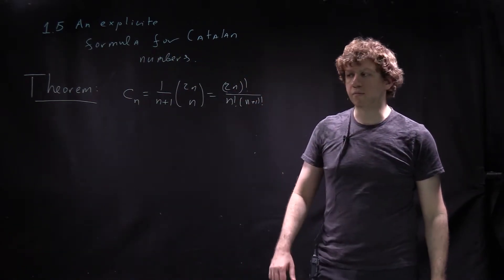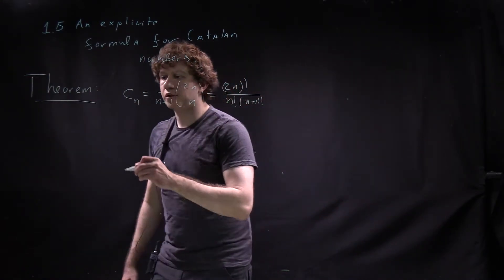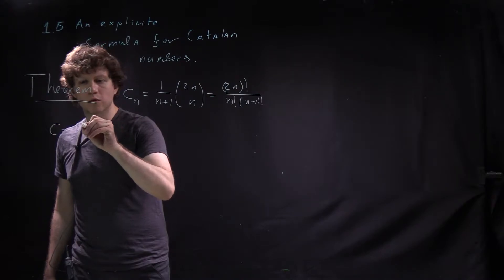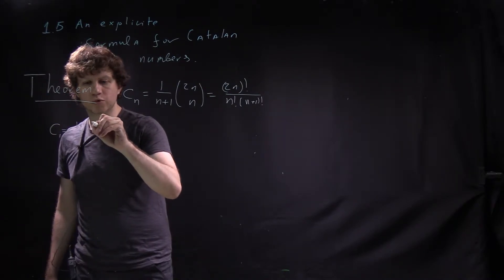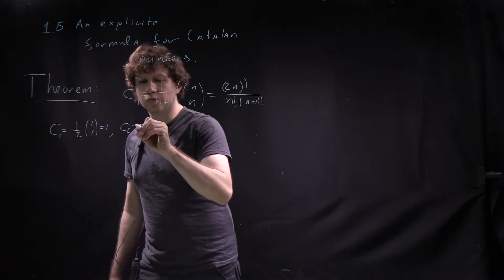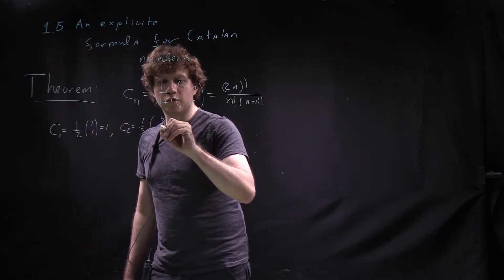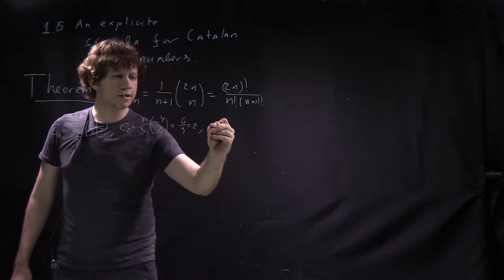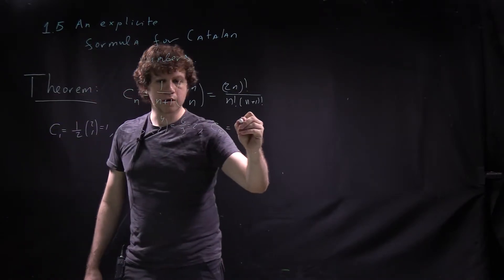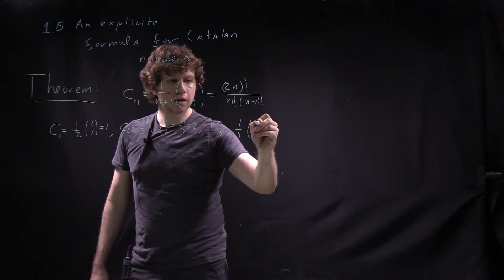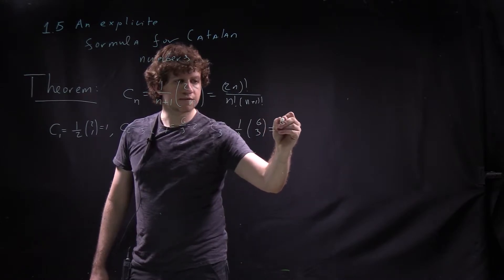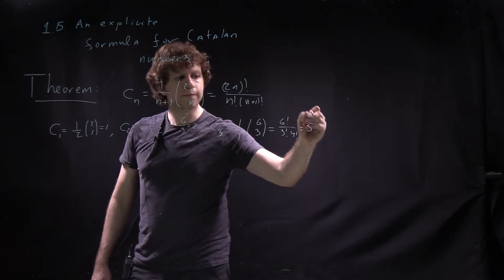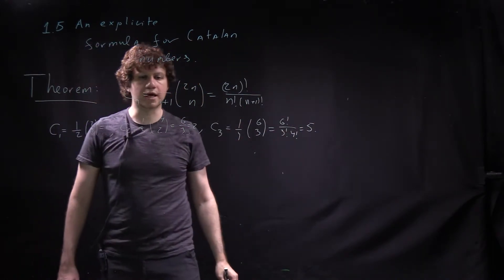This formula was found by Euler, and one can check it in the first few cases. C1 equals 1/2 times (2 choose 1), which is 1. C2 equals 1/3 times (4 choose 2), which is 6/3, which is 2. And C3 equals 1/4 times (6 choose 3), which equals 6! over 3! times 4!, which is 5. So indeed, it works as we discussed.